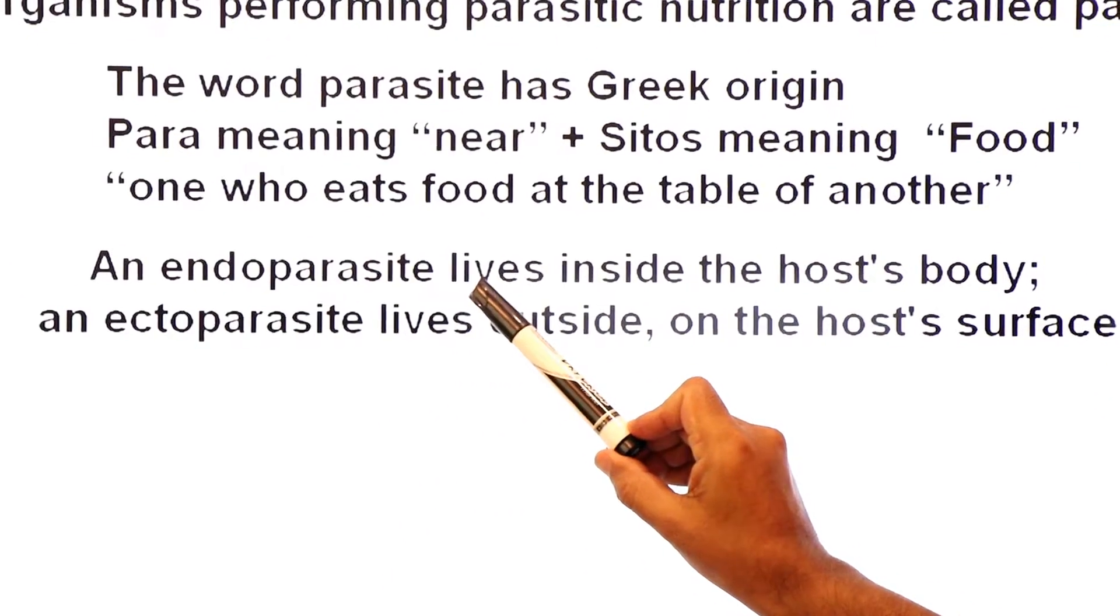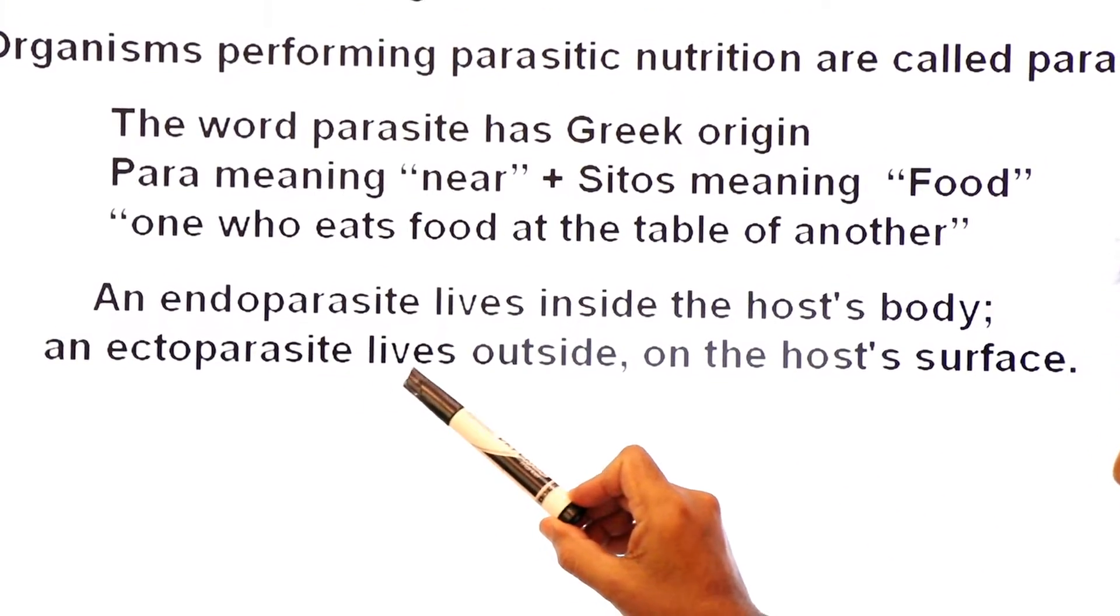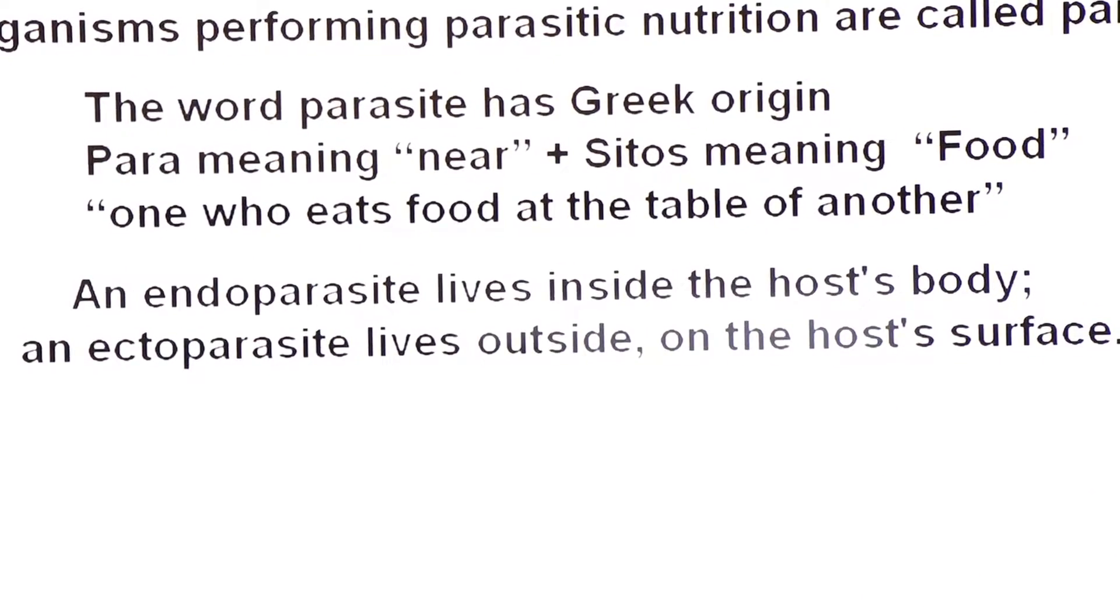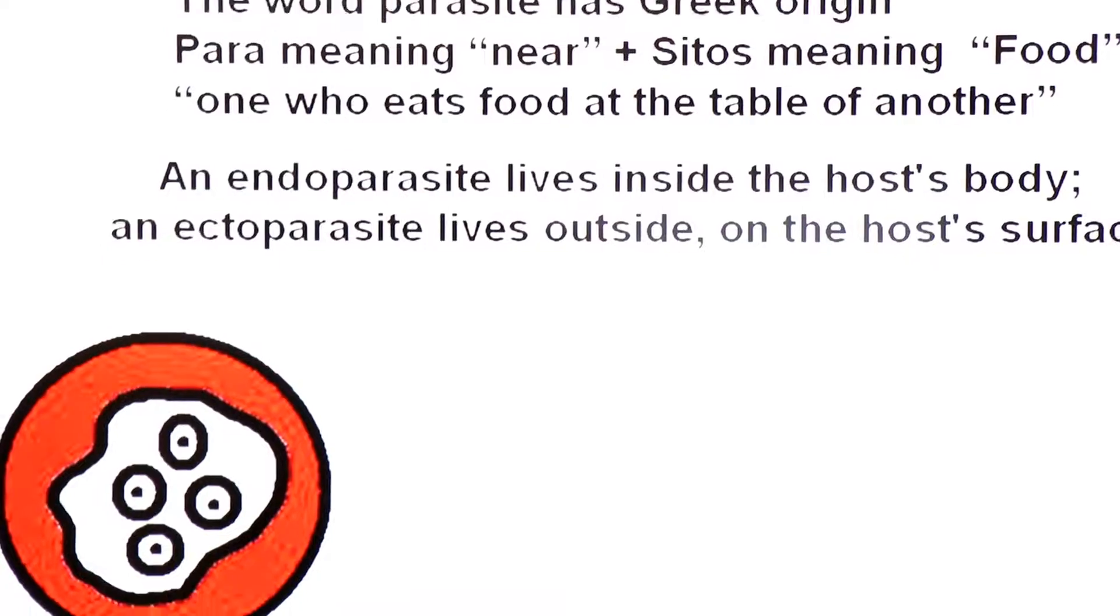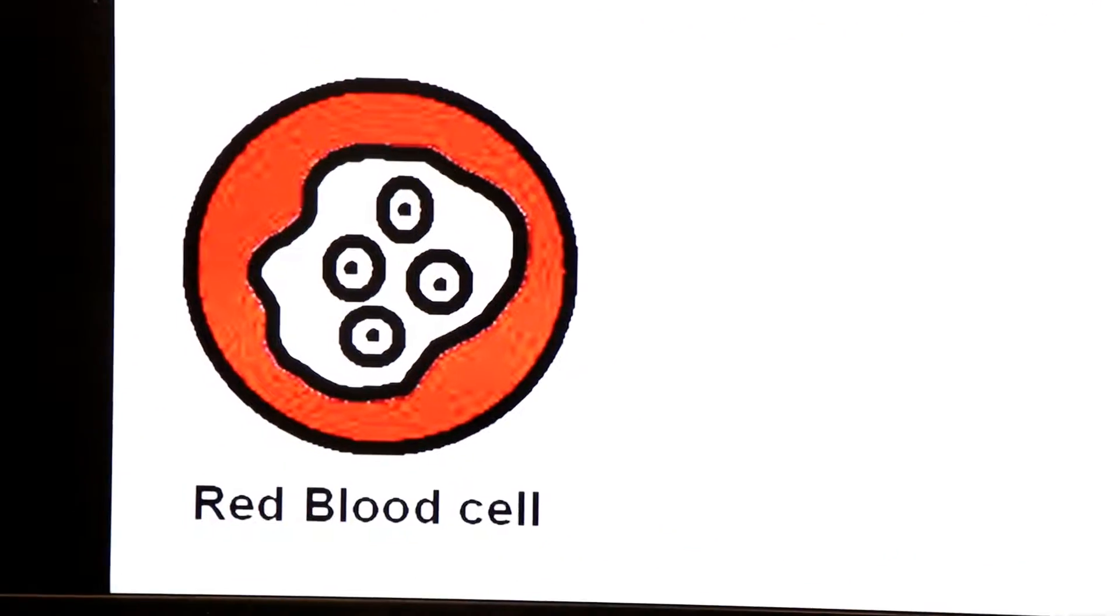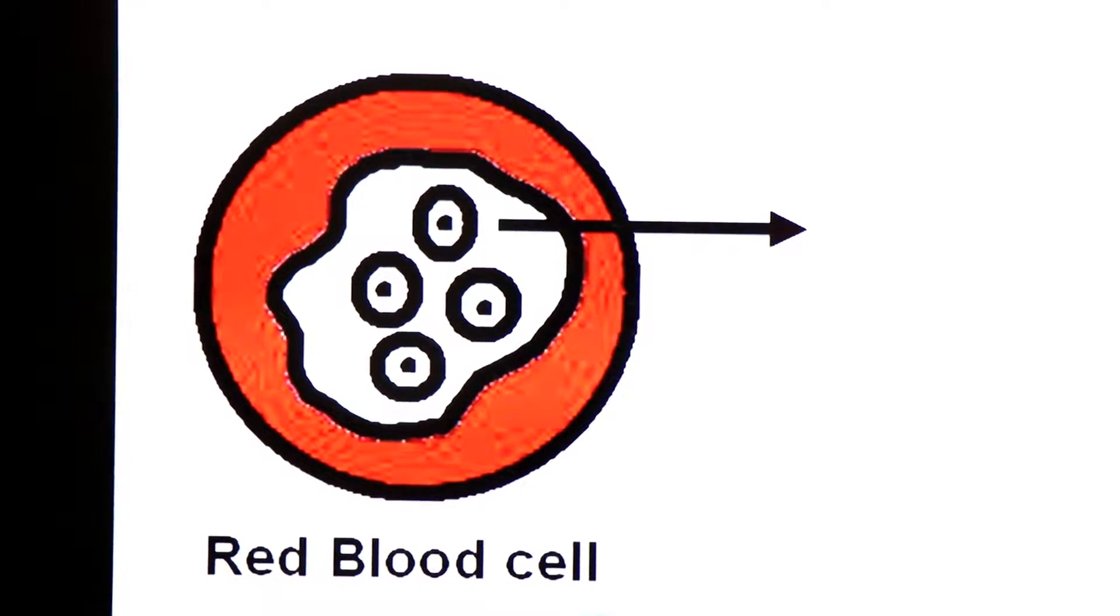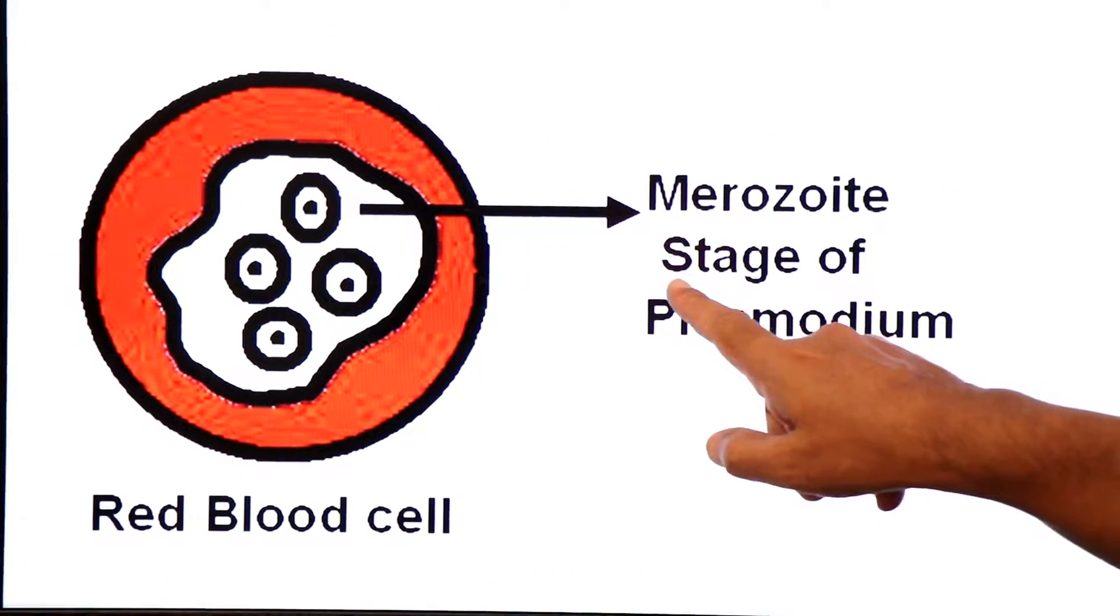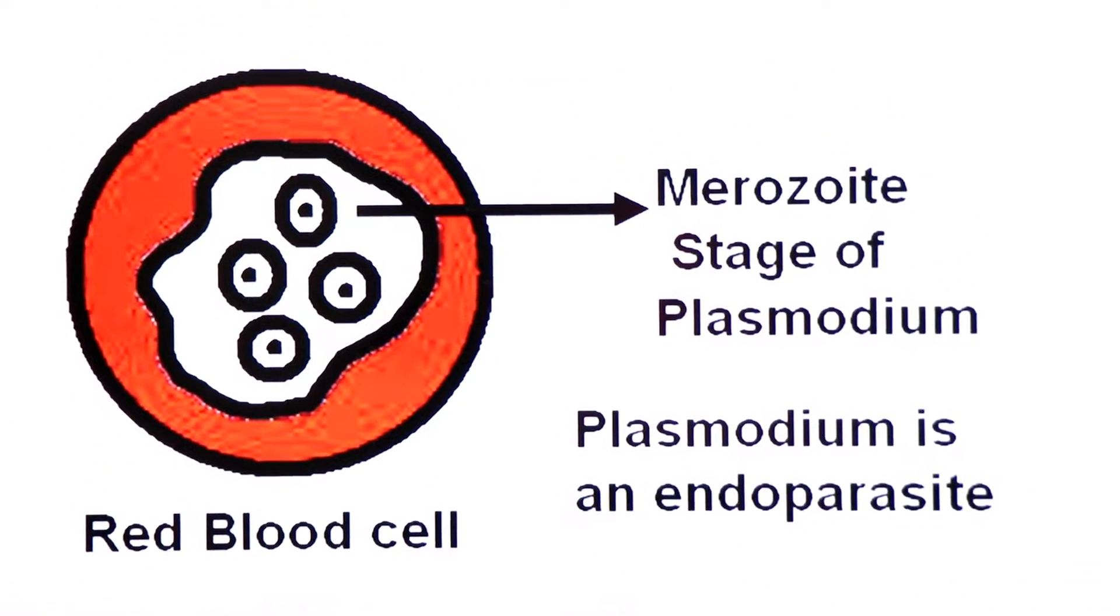An endoparasite lives inside the body of host and an ectoparasite lives outside on the surface of host. Let's see an example. You see here, this is red blood cell of human being. And Plasmodium, you must have studied, malarial parasite. This is the merozoite stage of Plasmodium. It is found inside the RBC. So dear student, Plasmodium is an endoparasite.